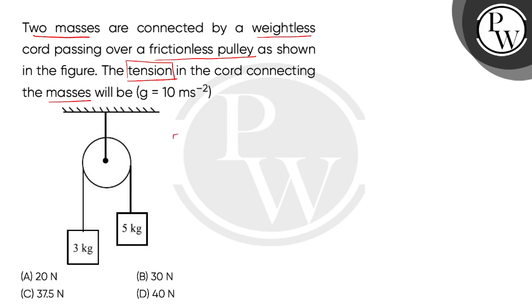5 kg mass we can see is heavy as compared to 3 kg. So it will be downward tendency with 5A force. Weight will be 5G vertically downward. Tension in the string is upward.